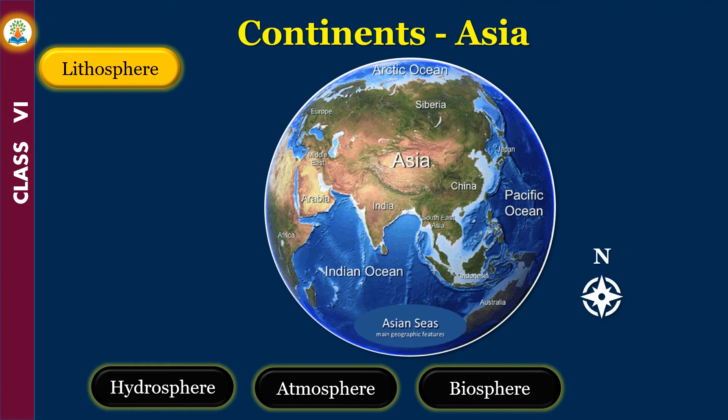Asia is surrounded by oceans on its three sides: the Arctic Ocean in the north, the Pacific Ocean in the east, and the Indian Ocean in the south.